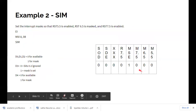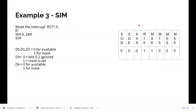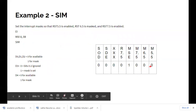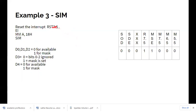Another example: enable RST 5.5, 6.5, and 7.5 — all are enabled, meaning all mask bits are zero. Set MSE to one. This gives accumulator value 08h. Execute MVI A, 08h then SIM. For resetting RST 7.5, set D4 to one and mask RST 7.5, giving MVI A, 18h then SIM — here 18h sets both the reset bit and MSE.